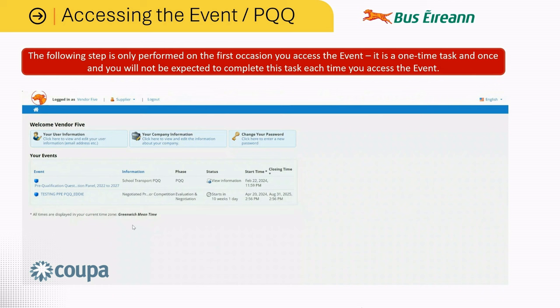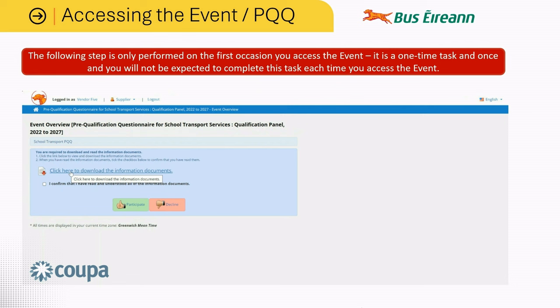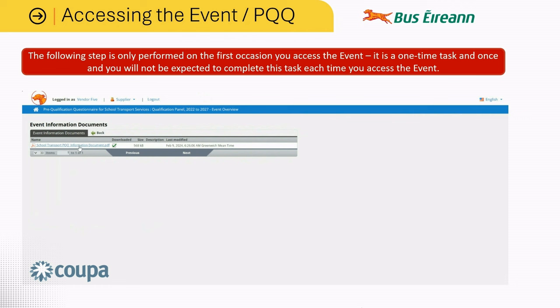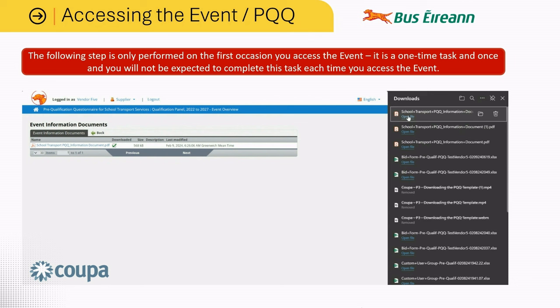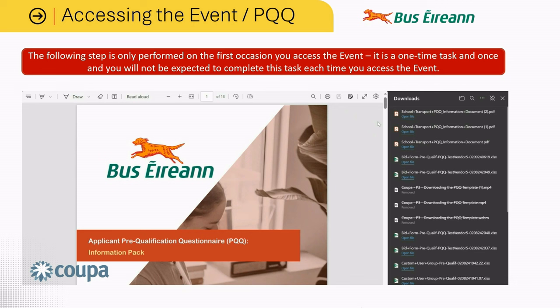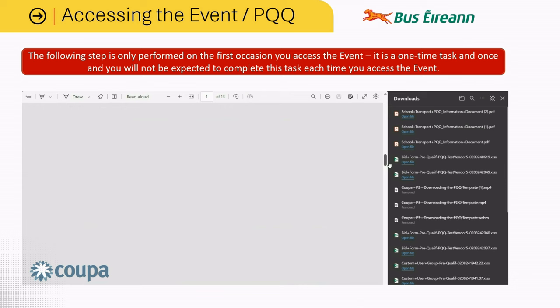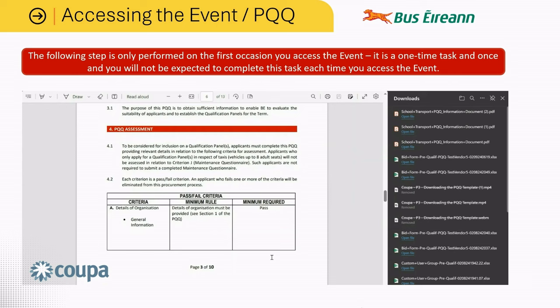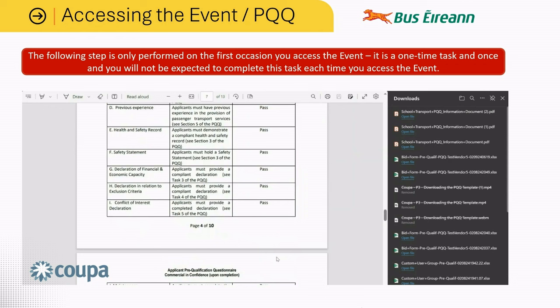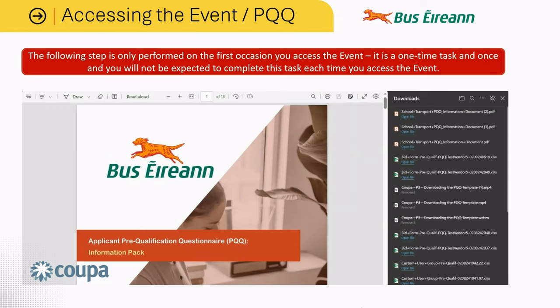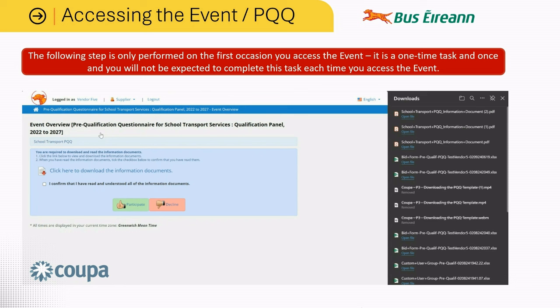Click here to download the information documents. Once downloaded, open the file. Then carefully read through the document, including all instructions, and ensure that you are fully familiar with the contents of this document. Once done, you can close the file and hit the back button. Click the tick box to confirm that you have read and understood the documentation, and then click the participate button.